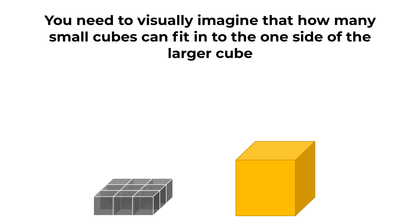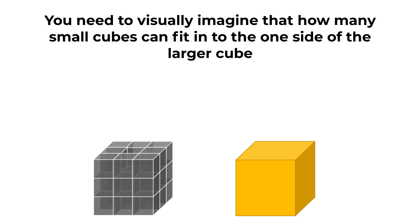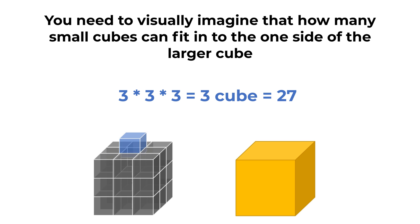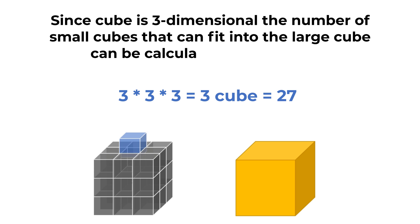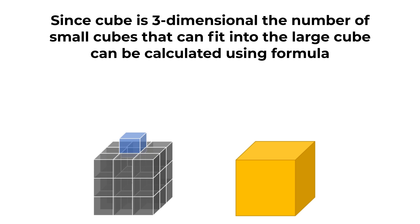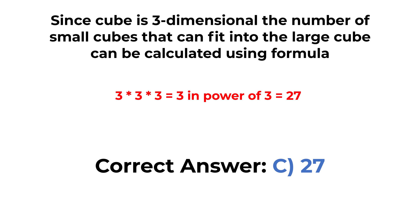Since a cube is three-dimensional, the number of small cubes that can fit into the large cube is calculated using the formula 3 × 3 × 3, which equals 3 cubed — that's where the word 'cube' might come from — and that equals 27. So the correct choice here is choice C: 27.